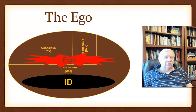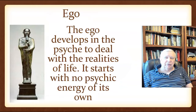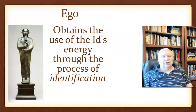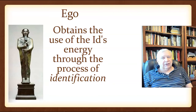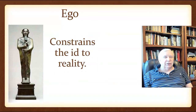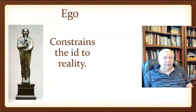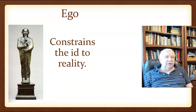Here's the ego. Notice the ego resides in all three levels of consciousness, unlike the id. The ego develops out of the necessity to deal with the realities of life. It starts out with no psychic energy of its own. What happens is the id gives some energy through the process of identification to the ego to get its needs taken care of. Eventually the id gives more and more psychic energy to the ego, to the point where the ego is strong enough to suppress the id and control it and constrain it to reality.